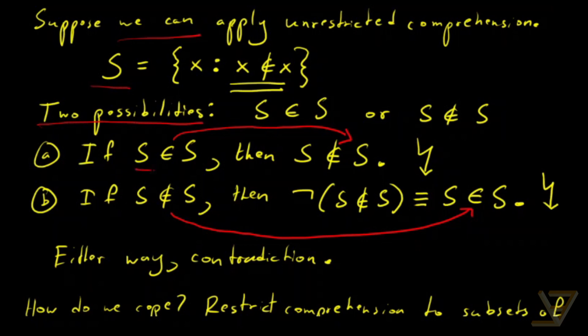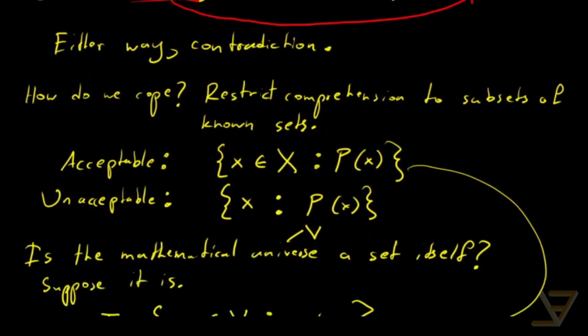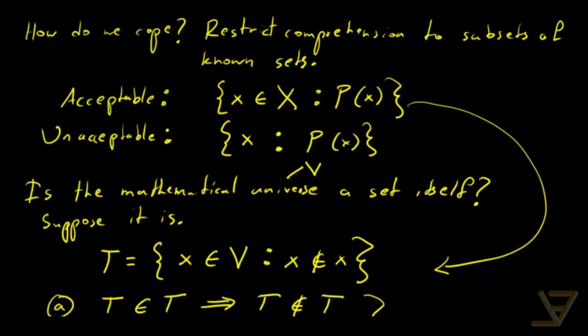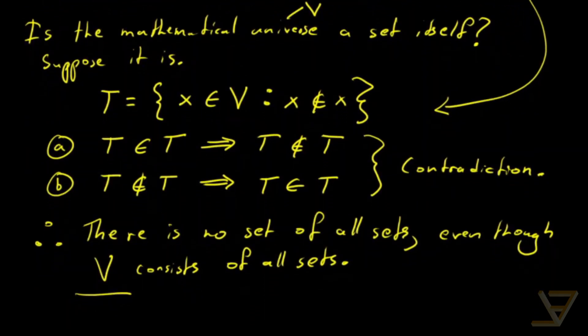And that led to two possibilities with regards to a set S. And in either case, we were led to a contradiction. And our first conclusion was we have to restrict comprehension.